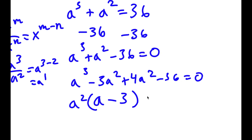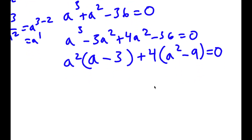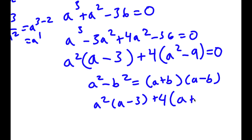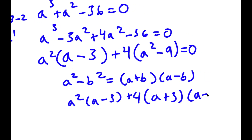From the right hand side I have 4a squared minus 36, and I can factor out 4, giving 4 times a squared minus 9. Now using the difference of squares rule — a squared minus b squared equals a plus b times a minus b — a squared minus 9 equals a plus 3 times a minus 3.